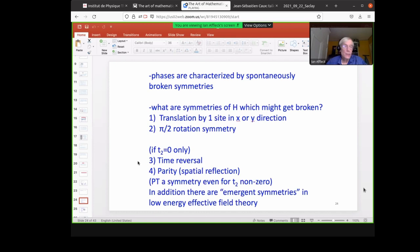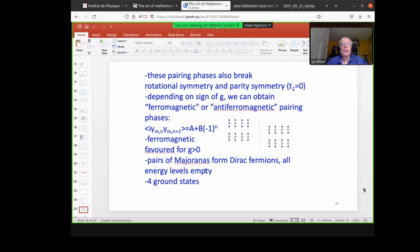So the phases are characterized by spontaneously broken symmetries. So what are the symmetries of H, which might get broken? So there's translation by one site in the x or y direction. There's also pi over two rotation symmetry. If T2 is zero only, there's time reversal. And there's also a parity spatial reflection. And a combination of parity and time reversal is a symmetry, even for T2 non-zero. In addition, there are some emergent symmetries in the low energy effective field theory.